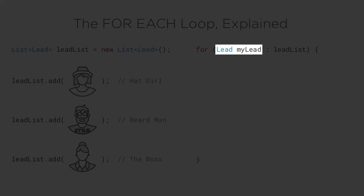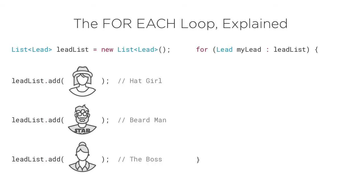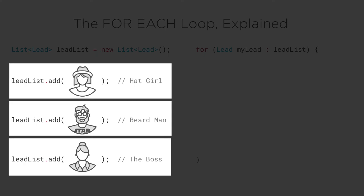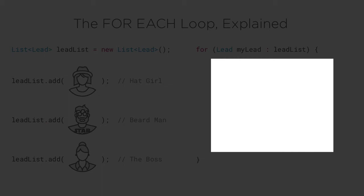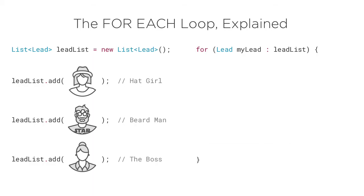The variable we're creating on the left must be the same data type of each record in our collection. That's because for each record in our collection, we'll assign it to this variable, run the code in our loop, then move on to the next record in our collection and repeat.